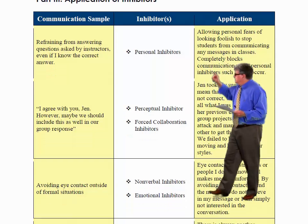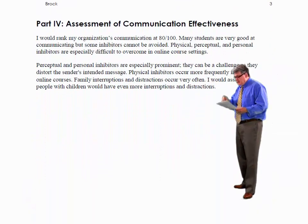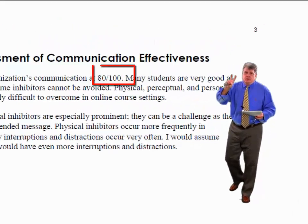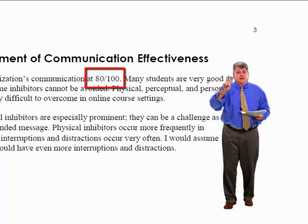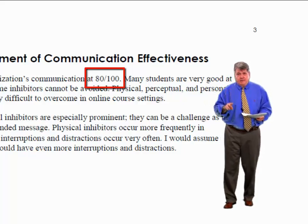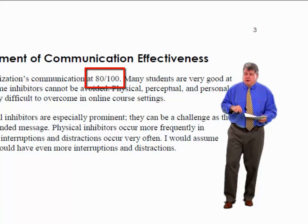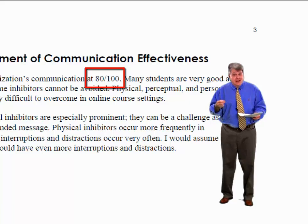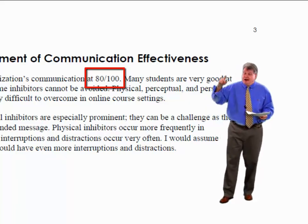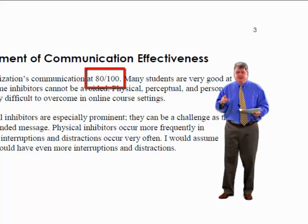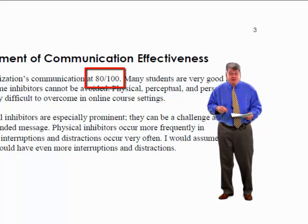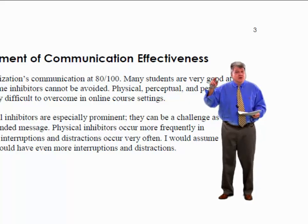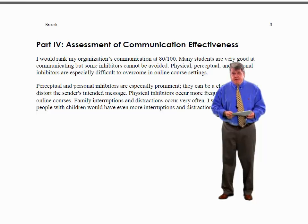The last part is the assessment of communication effectiveness. One thing that students get wrong here: whenever you have a number that is two or more digits, you must write the numeral, not the word. Numbers one through nine you can write out — O-N-E, T-W-O, T-H-R-E-E — but from 10 or 11 and up, they have to be digits. It differs from style guide to style guide, so check which one we're using.